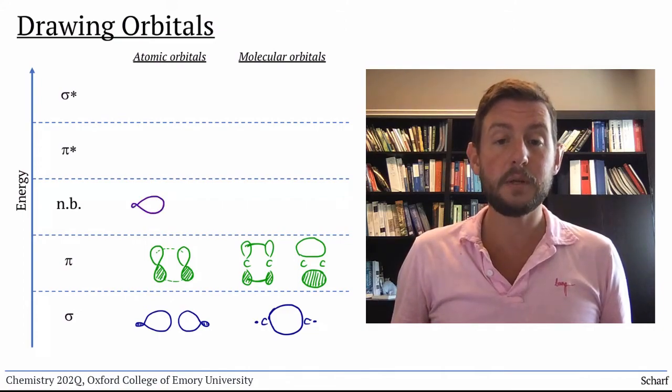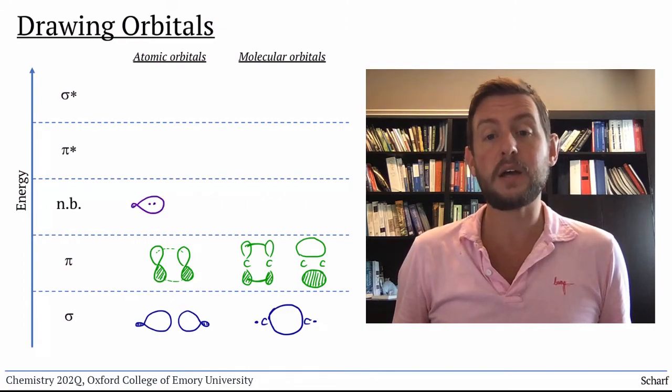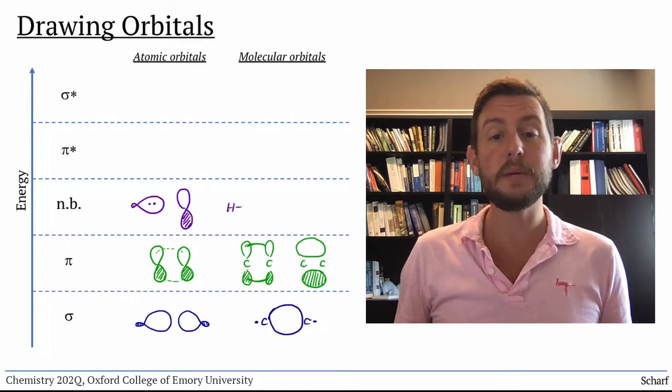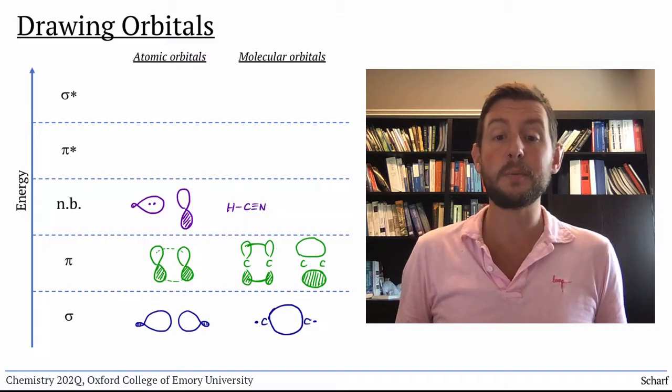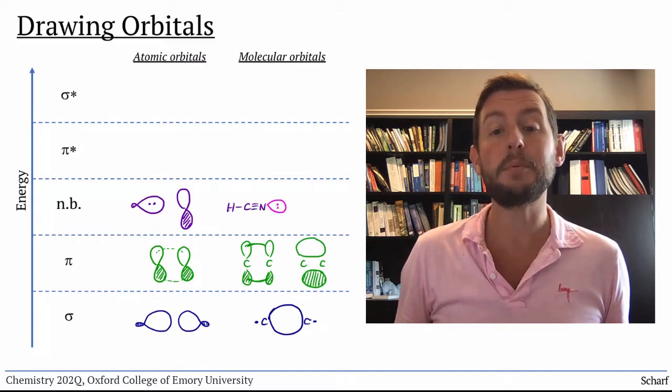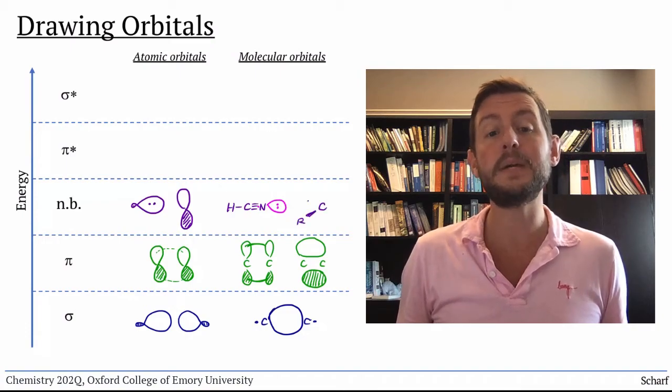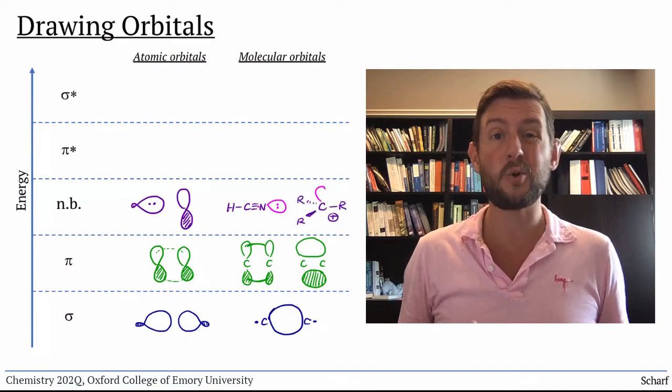Non-bonding molecular orbitals just look like the atomic or hybrid orbitals they came from. In this class, they'll usually be lone pairs in hybrid orbitals, like the sp hybridized lone pair on HCN, or an empty p orbital on boron or a carbocation.